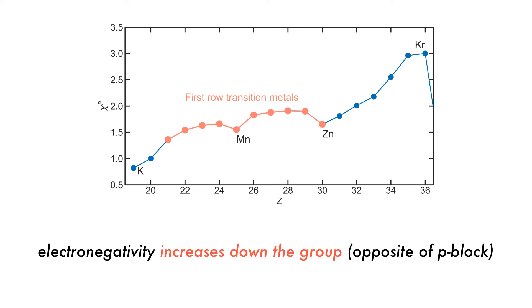For the d-block, the electronegativity of the transition metal elements increases progressing down a column due to the poor shielding from diffuse d orbitals. This is the opposite of the main group elements.